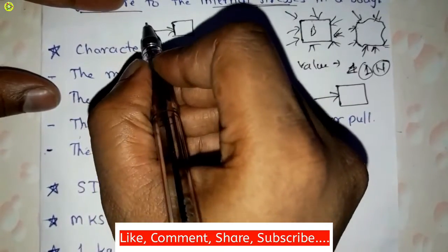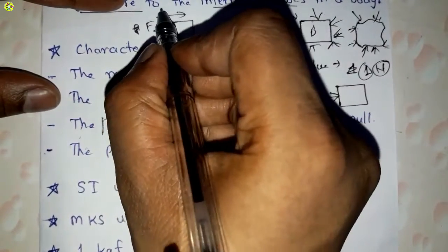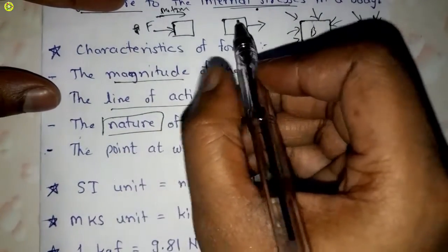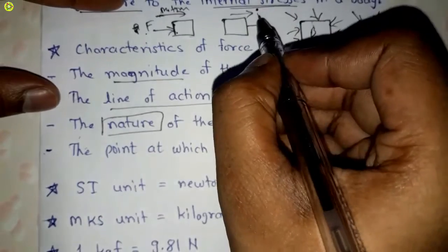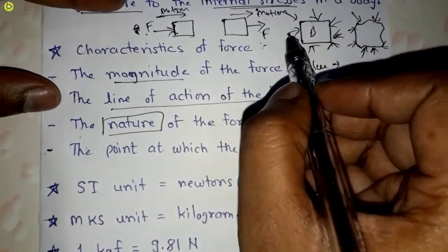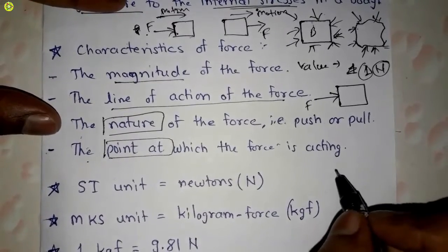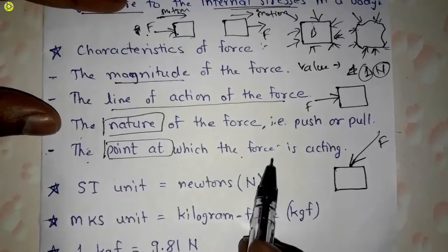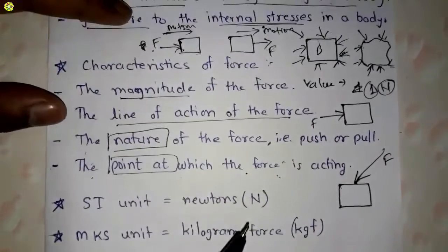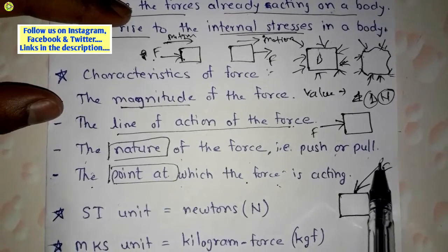The third characteristic is the nature of the force — that is, push or pull. Suppose here is a body and here is a push force applied from this direction, causing motion of the body. And here is a pull force on the body, with motion along the force direction. The fourth characteristic is the point at which the force is acting — suppose this is the body and at this point the force is acting, this is called the point of application of the force.